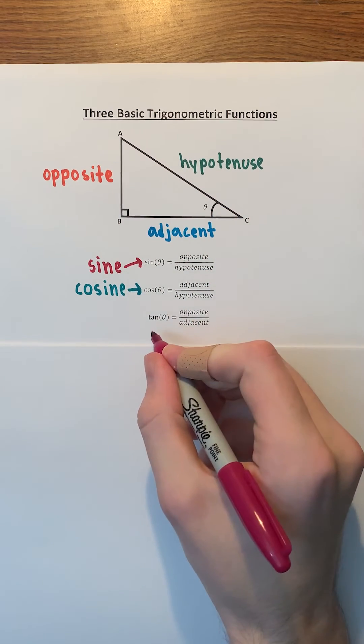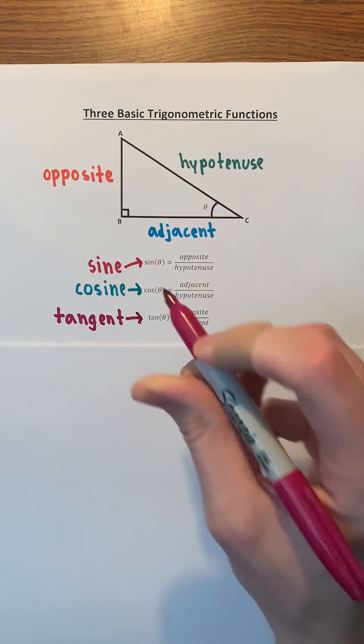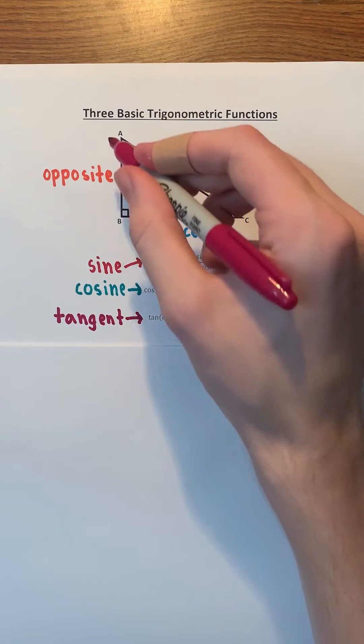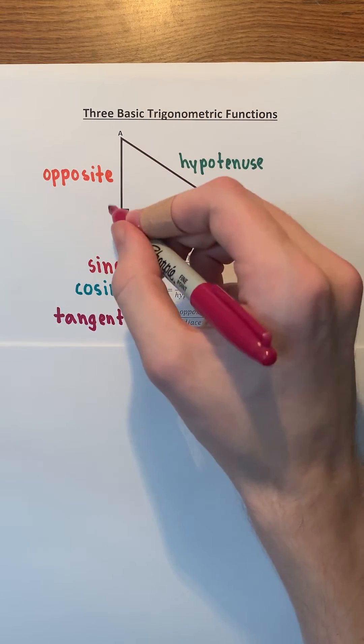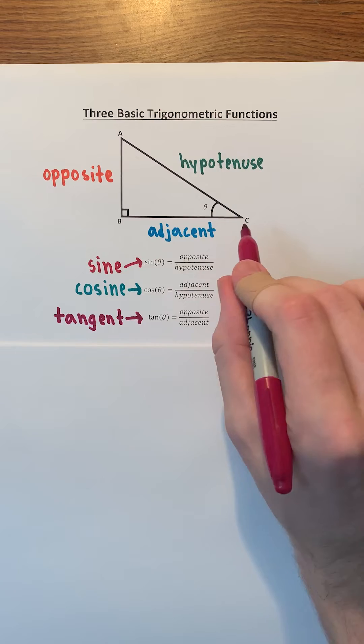Lastly, tangent of theta is equal to opposite over adjacent — the length of the opposite side over the length of the adjacent side.